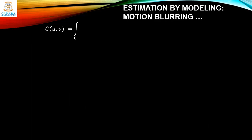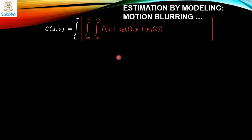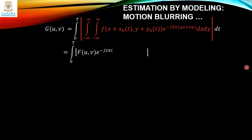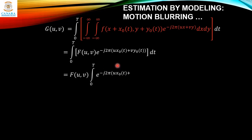In the last equation, the term inside the outer brackets is the Fourier transform of the displaced function f(x − x₀(t), y − y₀(t)). Simplifying, this becomes ∫₀ᵀ F(u,v)·e^(−j2π(u·x₀(t) + v·y₀(t))) dt, and taking F(u,v) outside the integral: F(u,v) · ∫₀ᵀ e^(−j2π(u·x₀(t) + v·y₀(t))) dt.